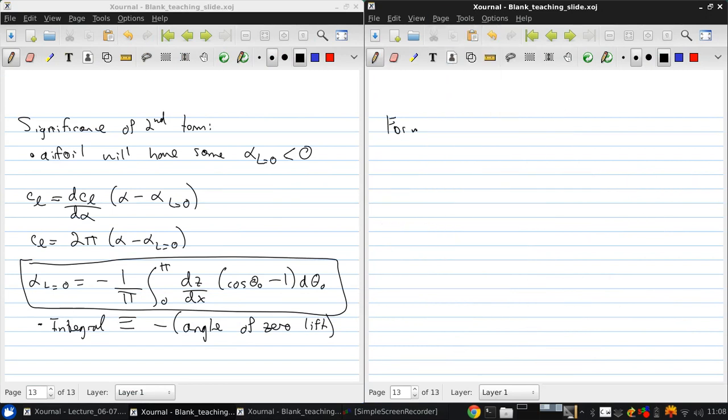Finally, for the moments, the moment coefficient about the leading edge will be minus pi over 2 a0 plus a1. Now here we need to evaluate the second term a2. And the moment coefficient about the quarter chord point is pi over 4 a2 minus a1. So for a cambered airfoil, we can see that the quarter chord point is not the center of pressure, as the moment coefficient is non-zero there.